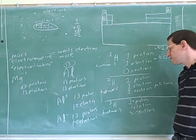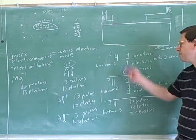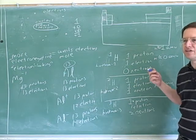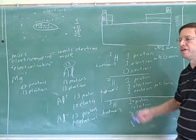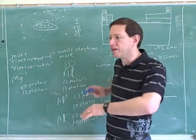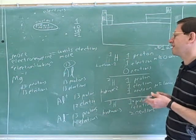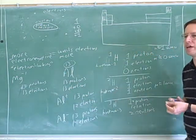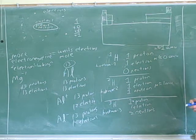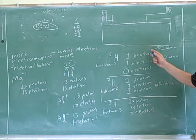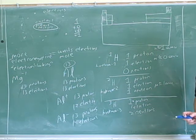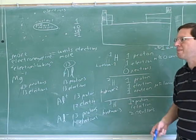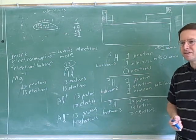So what do we call elements that have the same number of protons but different numbers of neutrons? Those are what are called isotopes. Isotopes have nothing to do with the electrons — two things are isotopes if they have the same number of protons and different numbers of neutrons, or they're the same element but with different numbers of neutrons.